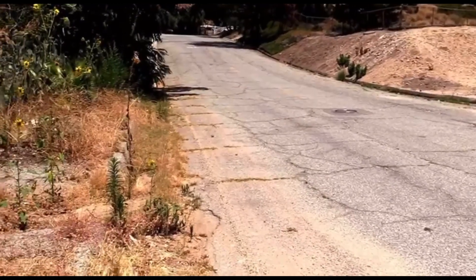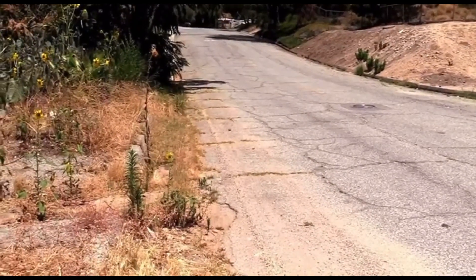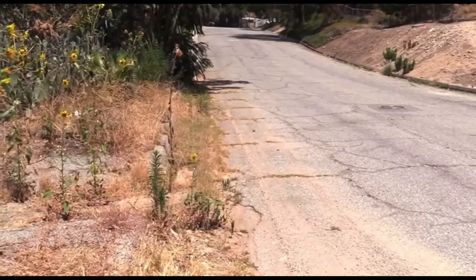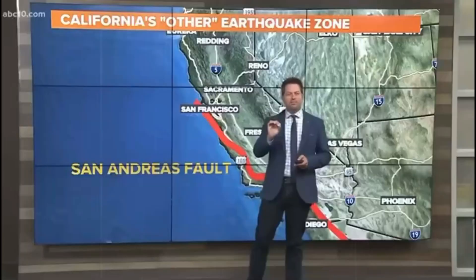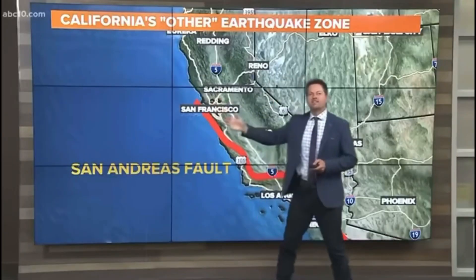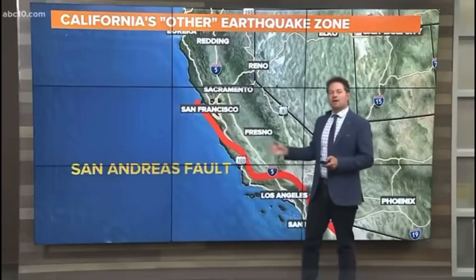You can see the deformed pavement here as well on this side of the street. You're probably thinking about earthquakes along the San Andreas fault.